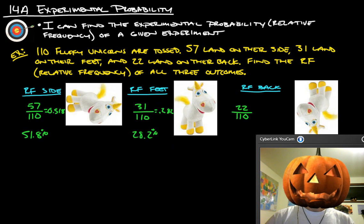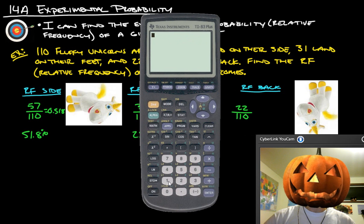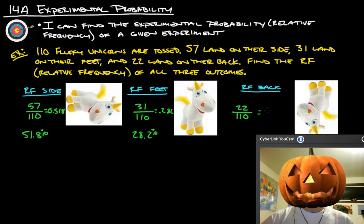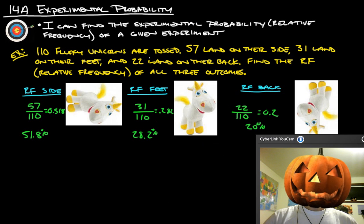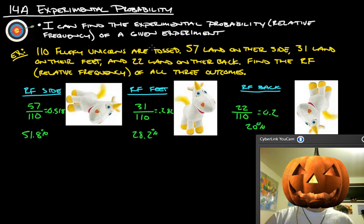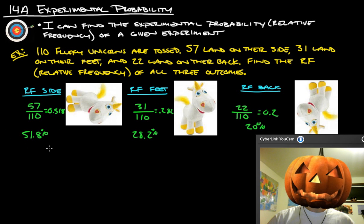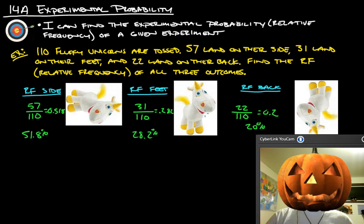And then we'll do the last one, which is 22 over 110. And that gives us .2, or 20%. So that's really it on the relative frequency there, is just figuring out the percent of times that it happens, each of the different events happen.